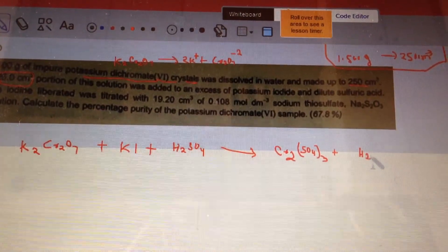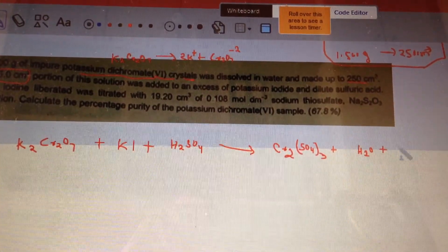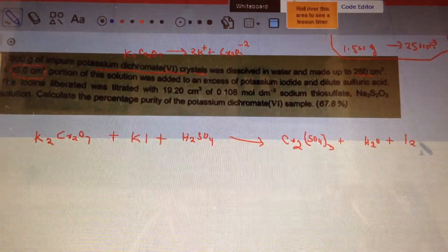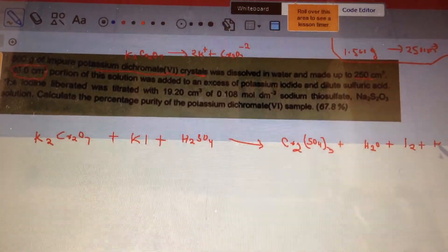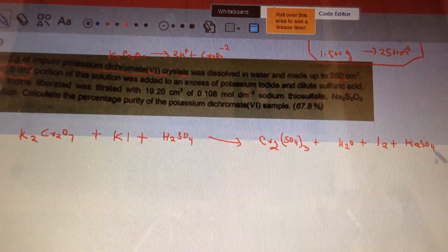All right, so that actually makes Cr2(SO4)3 plus water plus iodine. So obviously it's going to be water here, plus iodine, and K2SO4.